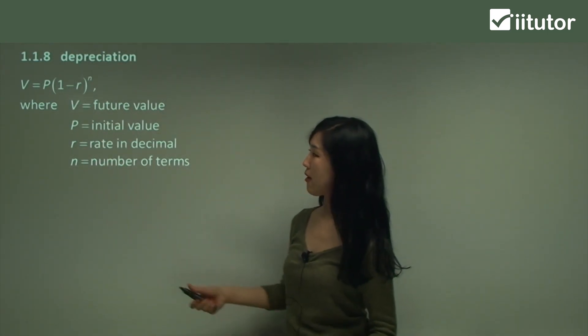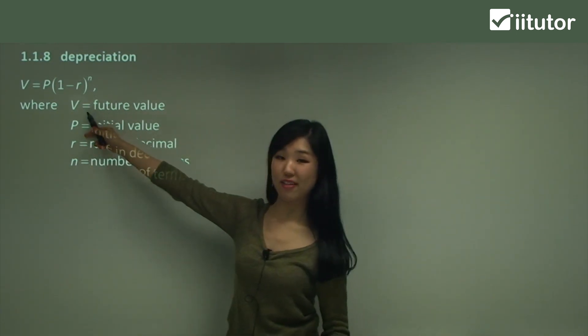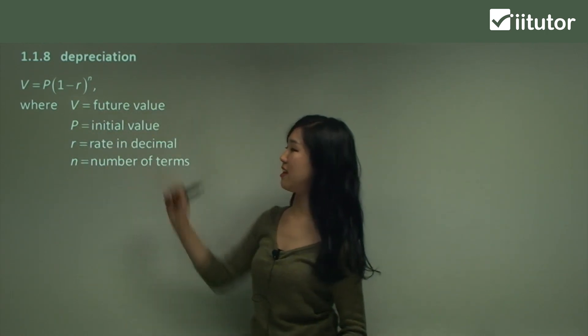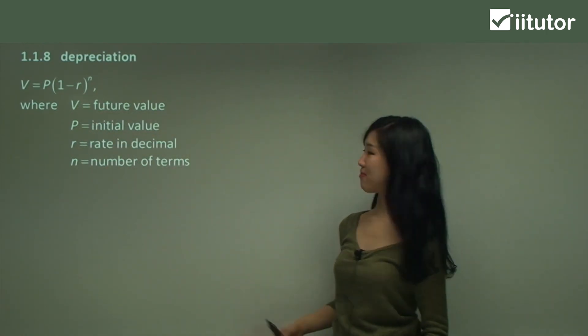It's not too difficult to memorize. All the values are the same as appreciation, where v is our future value, p is the initial value, r is the rate, and n is the number of terms. So let's give it a go.